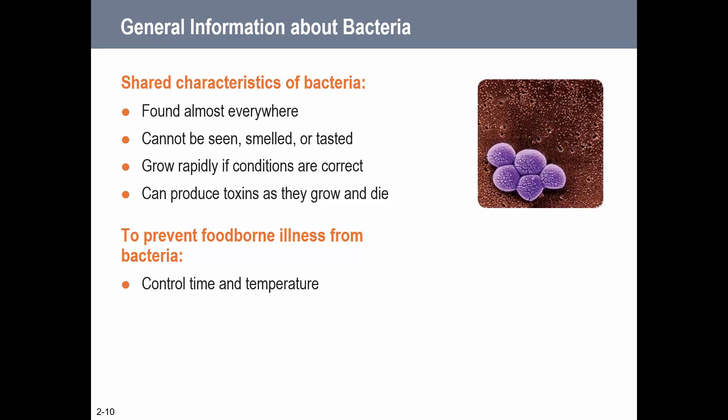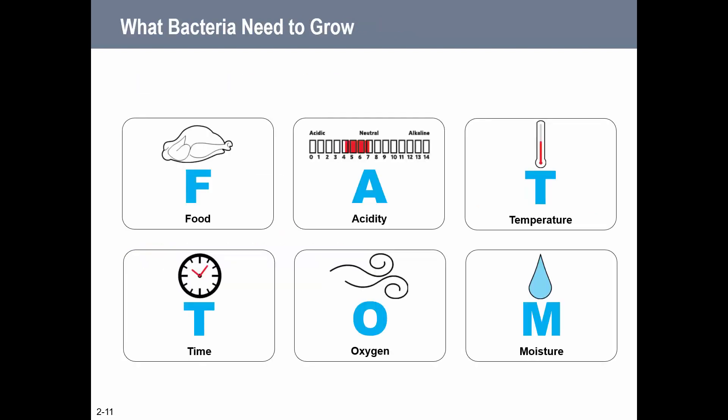Bacteria is really all around us. Some statistics say we actually have more bacteria cells in our human bodies than human cells. We can't smell, taste, or see them - it's not like I can smell my chicken and know whether it has salmonella. These can grow rapidly if conditions are correct. Certain bacteria can also produce toxins. The major thing to prevent foodborne illness from bacteria is to control time and temperature. The conditions bacteria need to grow spell out FATTOM.